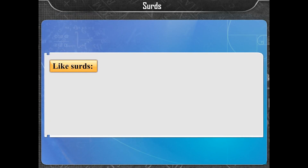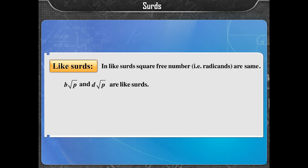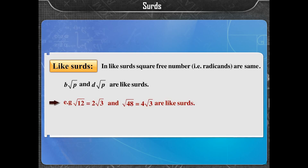In like SIRDS, the square-free number — that is, the radicand — is the same. B times square root of P and D times square root of P are like SIRDS. For example, square root of 12 equals 2 times square root of 3, and square root of 48 equals 4 times square root of 3 are like SIRDS.